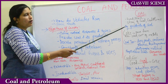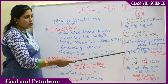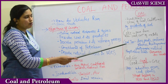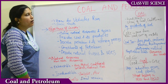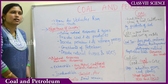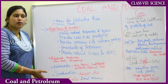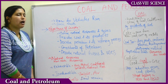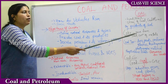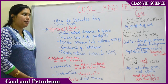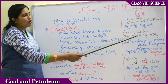The three byproducts of coal are coke, coal tar, and coal gas. Coming to coke: coke is the purest form of coal, and coal is always made up of carbon. Coke is 100% carbon and is used in the manufacturing of steel and the extraction of metals.